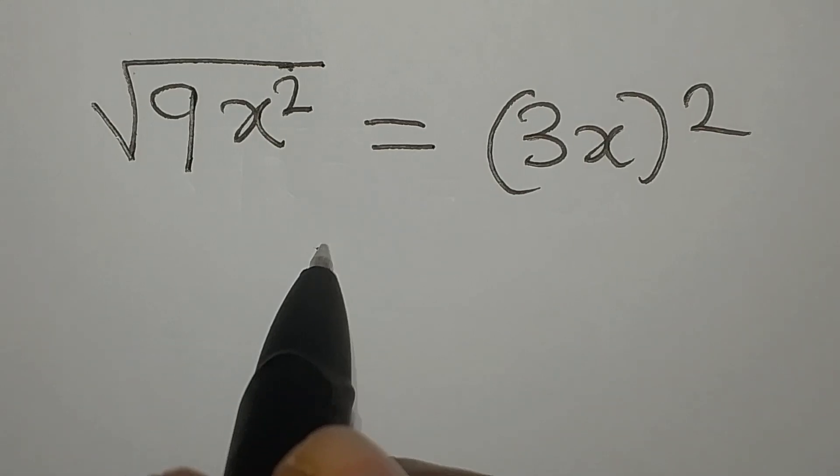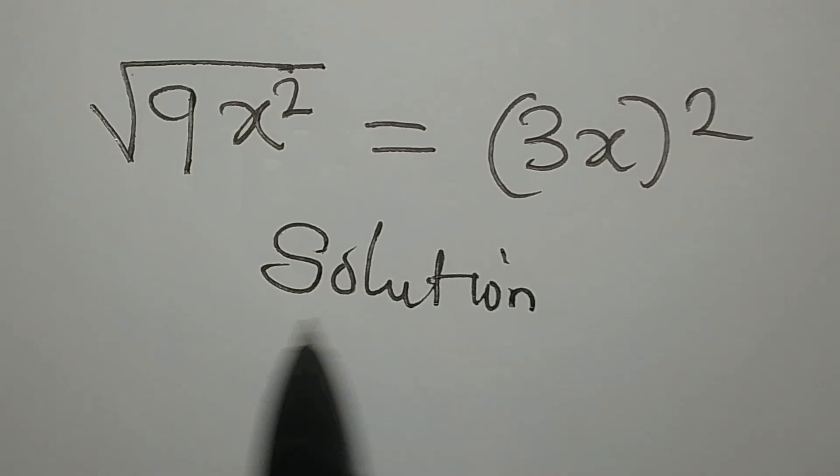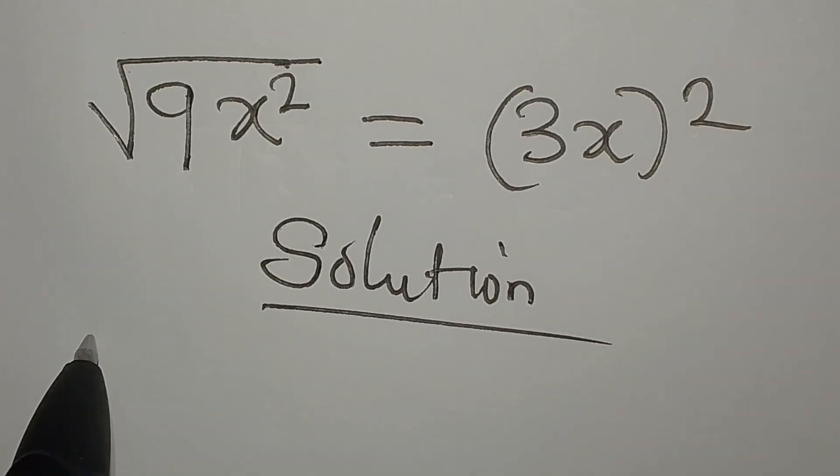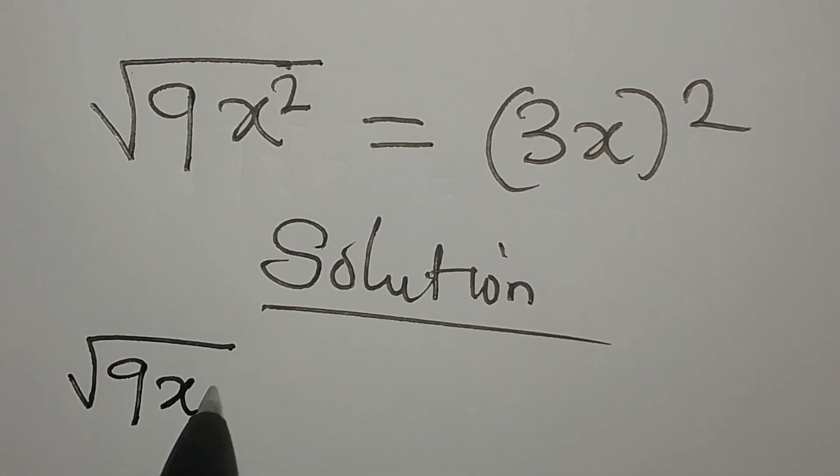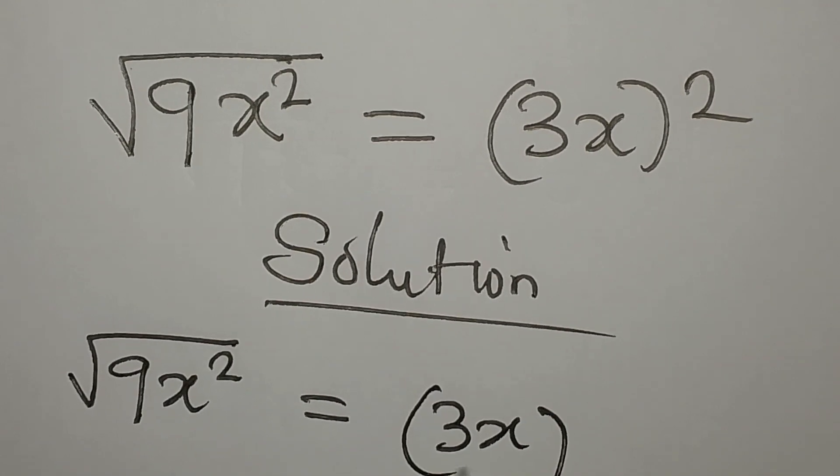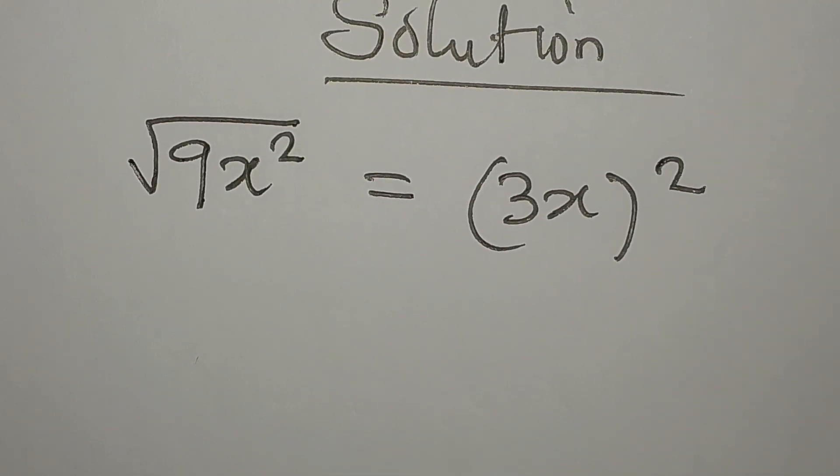Hello everyone, let's provide the solution to this Olympiad mathematics problem: square root of 9x squared equals 3x to the power of 2. So how do we deal with this?